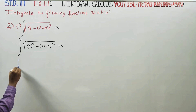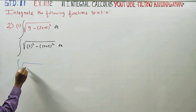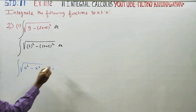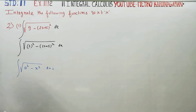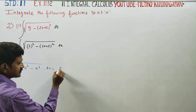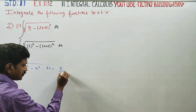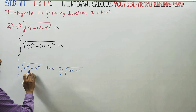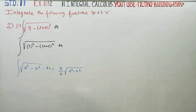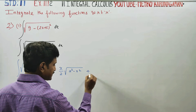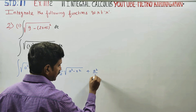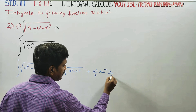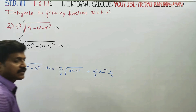The formula is: integration of square root of (a² - x²) dx. The formula goes like this: x/2 · √(a² - x²) + a²/2 · sin⁻¹(x/a). This is the formula.